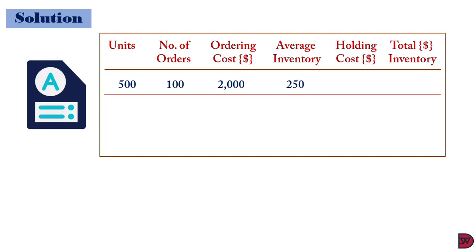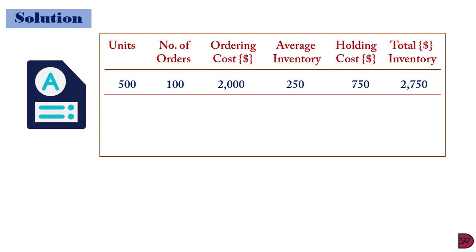The average inventory, as explained earlier, is half the order quantity — so 500 units divided by 2, giving 250. When we come to the holding cost, it will be the average inventory of 250 times the holding cost per unit. The holding cost was established as 10% of the inventory value of $30, giving $3 per unit. So 250 multiplied by $3 gives $750. The total inventory cost will be the ordering cost of $2,000 plus the holding cost of $750, giving $2,750. This excludes the purchasing cost.